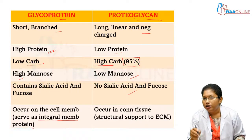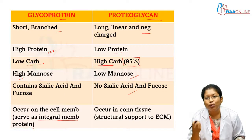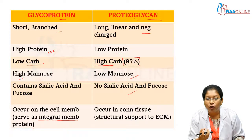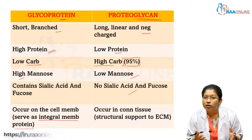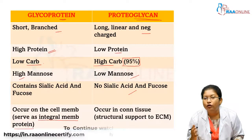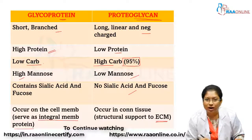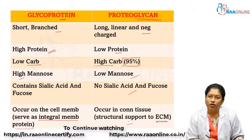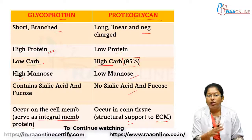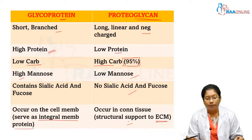Proteoglycan is essentially your glycosaminoglycans. Glycosaminoglycans attract large amounts of water and form a gel-like matrix. So they help in the formation of the extracellular matrix and give structural support to the extracellular matrix. These are the differences between glycoprotein and proteoglycan.